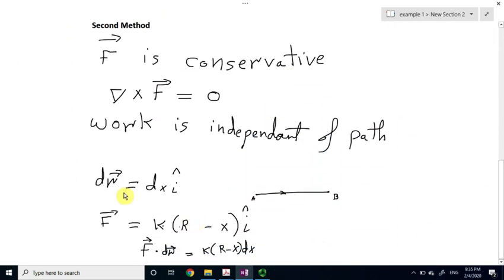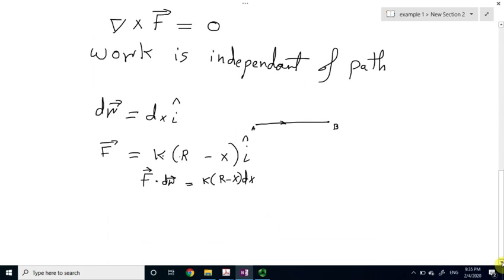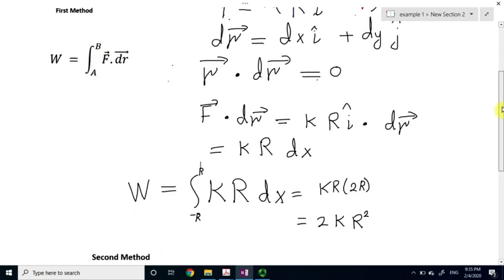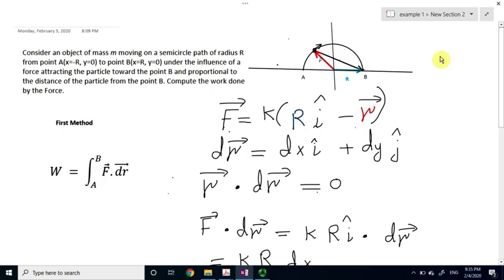For example, dr will only have one component, that's dx i unit vector. The force also will simplify, because our position vector will have only x component, and so, things will become easier. And, you can repeat the same procedure, and you will get the same answer. So, this is the second method, and I'm sure you can think of other methods to solve this problem.